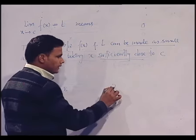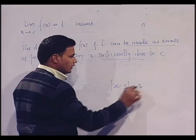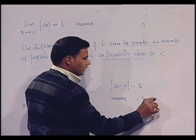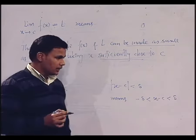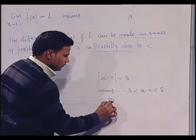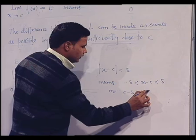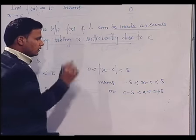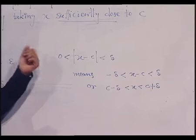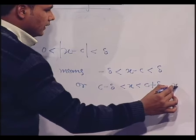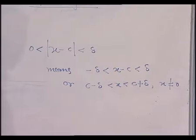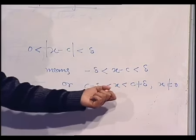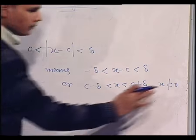Note that |x − c| < δ means x − c lies between −δ and δ, and x lies between c − δ and c + δ. But if we take this difference to be greater than 0, then x is not equal to c. So this represents the open interval c − δ to c + δ excluding the point c.